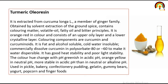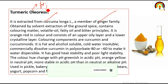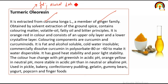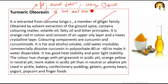Turmeric oleoresin is mainly extracted from Curcuma longa, a member of the ginger family. It is fat and alcohol soluble, cold water insoluble, with good heat stability and poor light stability. Color changes with pH: greenish in acidic pH and orange in neutral pH.